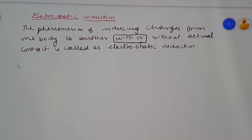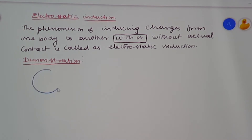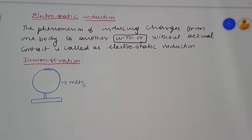In order to explain this, let us go with a demonstration. You consider a metallic spear which is properly insulated from the ground — placed over a wooden stand or a plastic stand, an insulated stand. This spear is made up of metal, so it is a conductor. You are having so many free electrons, and let us consider that these free electrons are distributed uniformly over its surface.